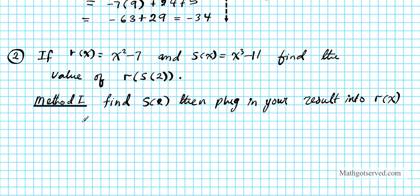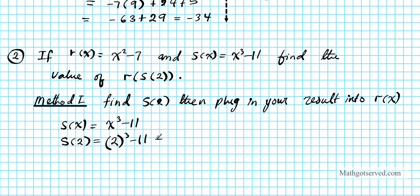Starting from the interior: the inner function s of x is x to the third minus 11. So what is s of 2? We replace x with 2, giving us 2 to the third minus 11. 2 to the third is 8, minus 11 is negative 3. So s of 2 equals negative 3.